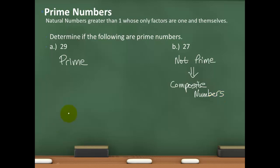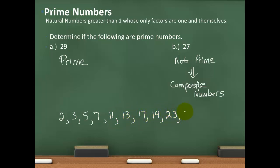Now we know how to find factors and we know the definition of prime numbers. I want to list a few prime numbers because they'll be valuable for what we're about to do. My smallest prime number is 2, followed by 3, 5, 7, 11, 13, 17, 19, 23, 29, 31. There are plenty more primes larger than 31, but for our Math 101 class, these are a good list to know because they may show up in future examples.